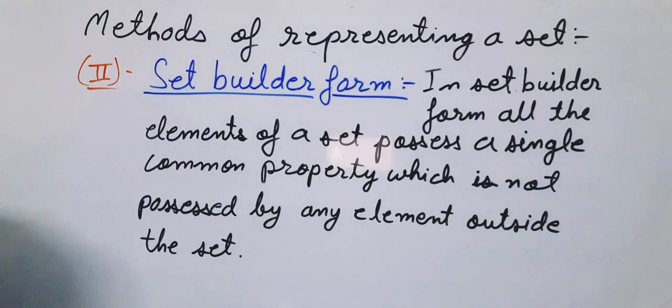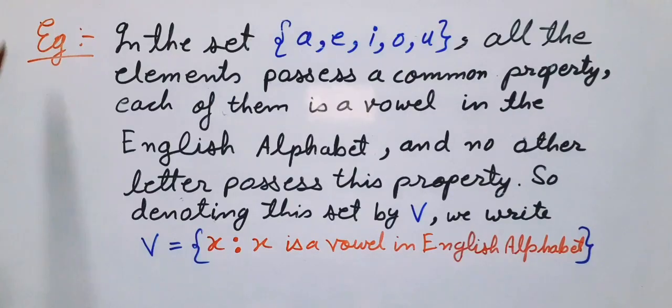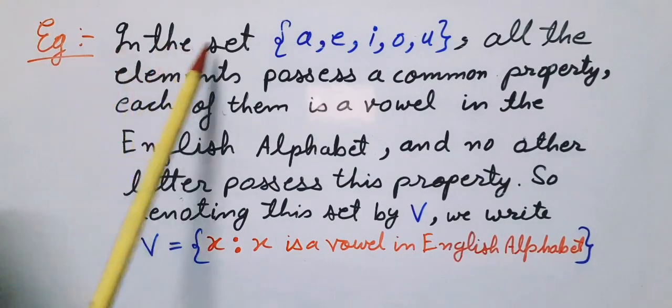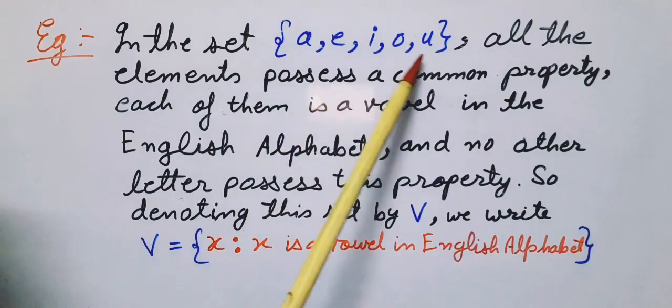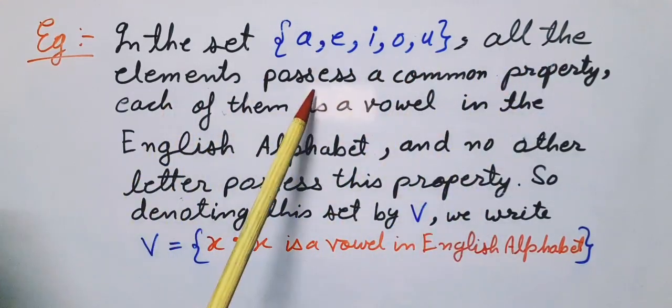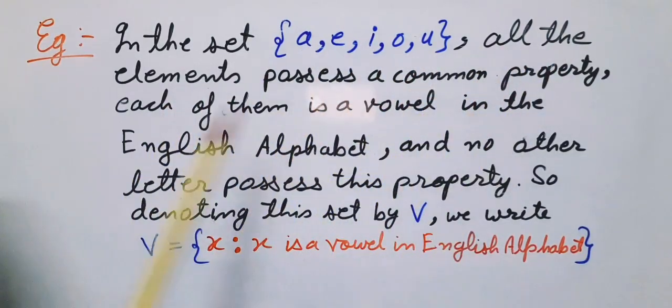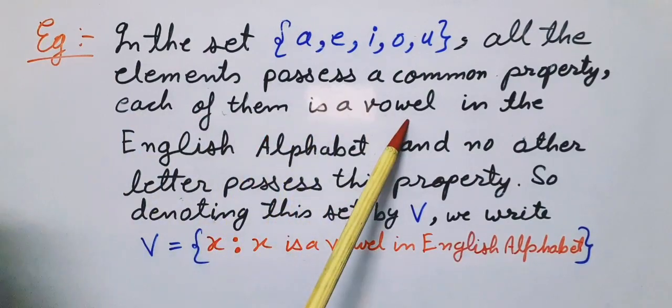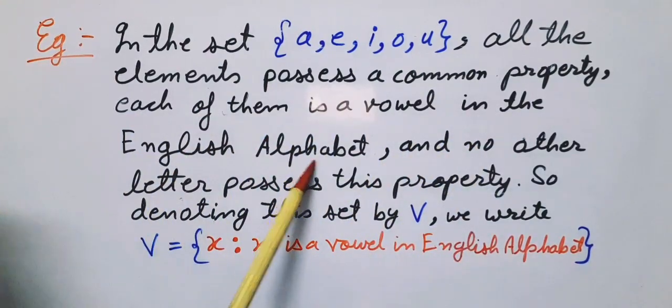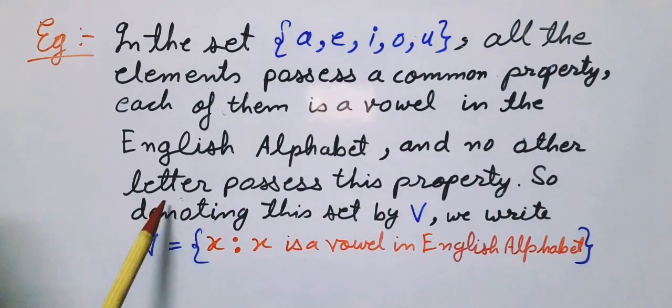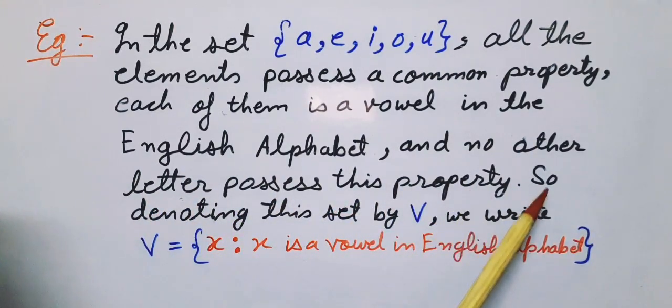Let us understand this form with the help of an example. In the set {a, e, i, o, u}, all the elements possess a common property—each of them is a vowel in the English alphabet, and no other letter possesses this property.